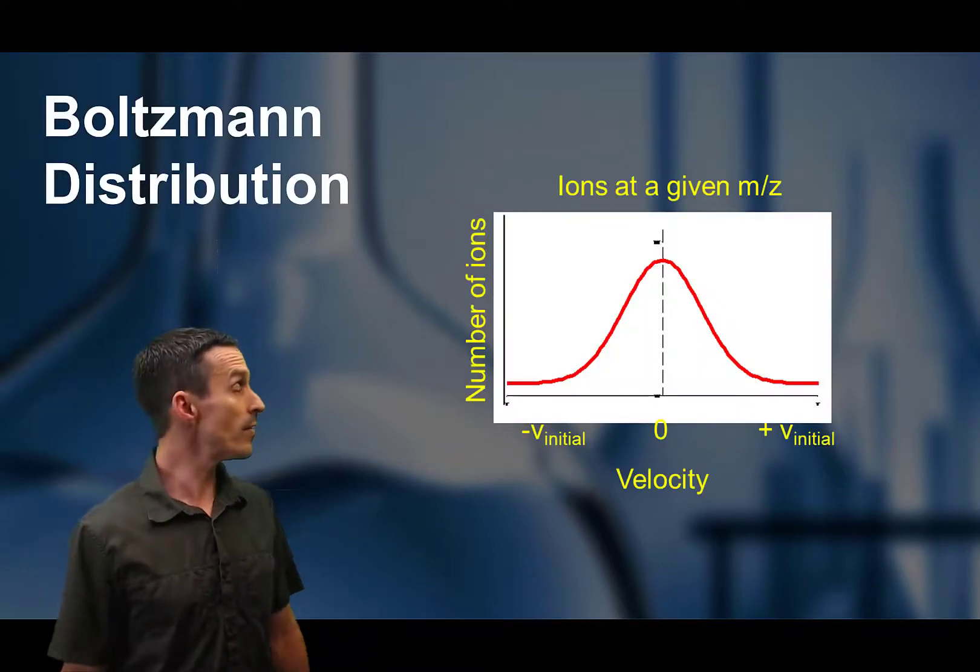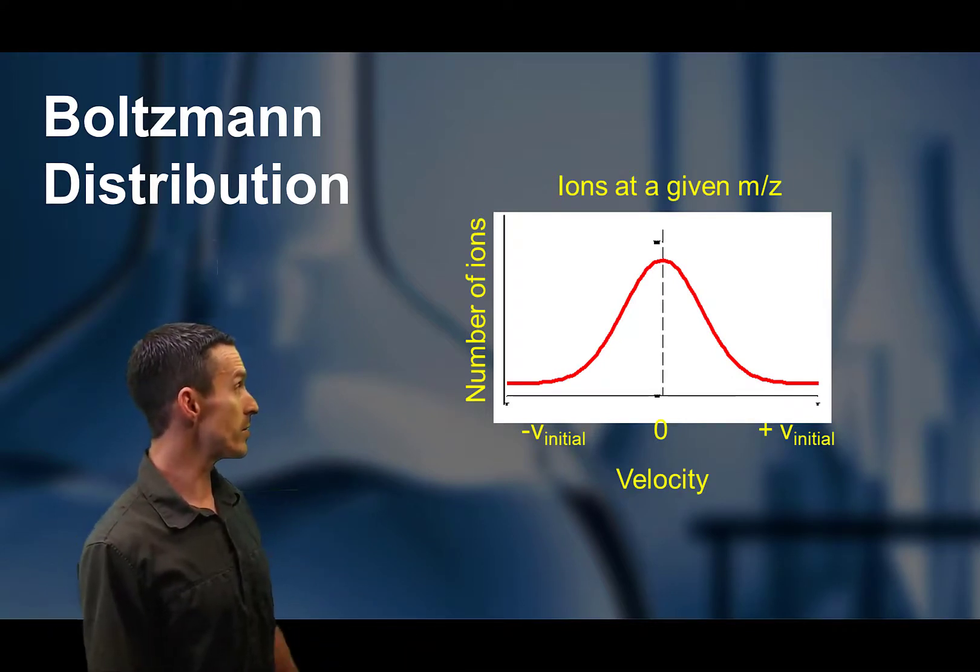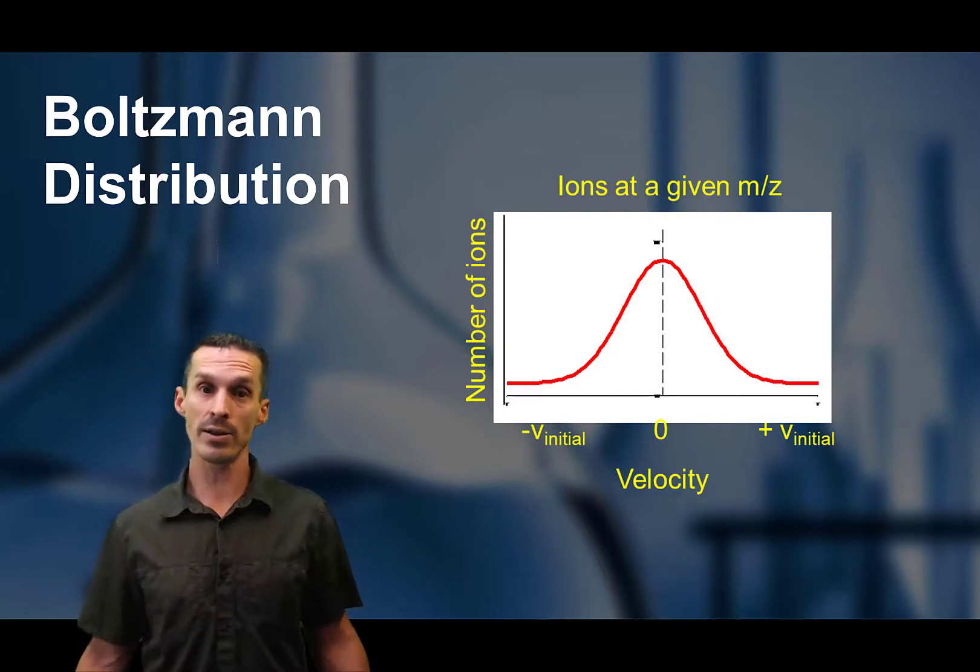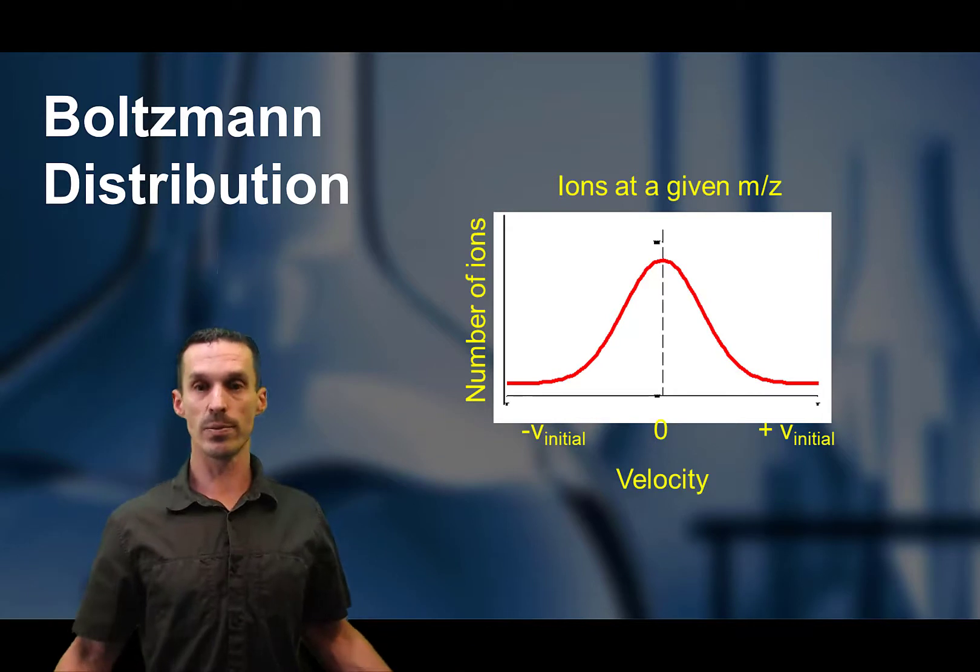And it has to do with the fact that ions are never totally sitting at rest. I mean, they're not at absolute zero. So this Boltzmann distribution curve is basically describing that some ions are higher in energy, some of them are lower in energy. So there's going to be a distribution.